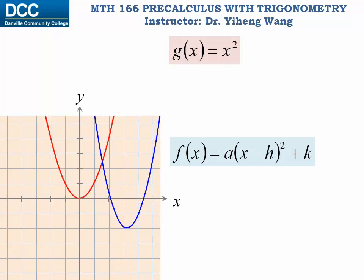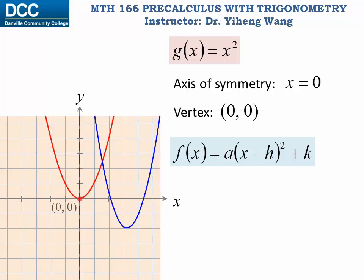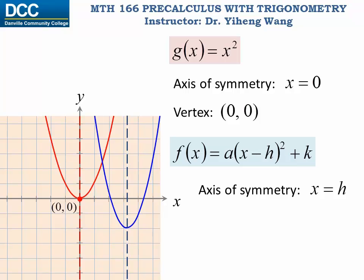Hopefully now you can see why we wanted to rewrite the quadratic into standard form — we can easily sketch it based on what we know. The original parent function g(x) = x² has an axis of symmetry at x = 0 (the y-axis) and a vertex at the origin (0, 0). Similarly, our quadratic f(x) has an axis of symmetry at the vertical line x = h, since we shifted the parent graph h units to the right. Its vertex has coordinates (h, k).